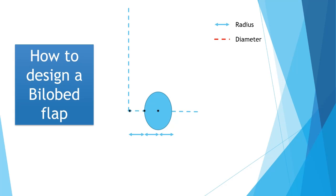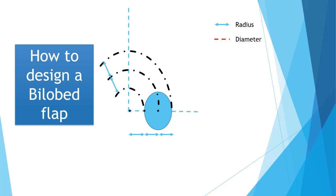Next you need to draw some arcs. The first arc is drawn from the inner edge of your defect at a distance of one radius from the pivot point. The next arc is from the center of your defect, and the third arc is from the outer edge of your defect. Each of these three arcs are one radius apart, and the third arc is three radii from the pivot point.